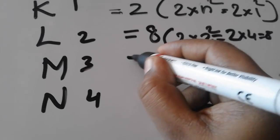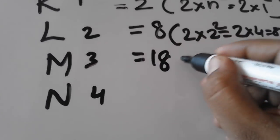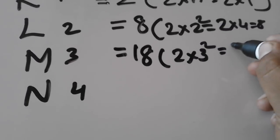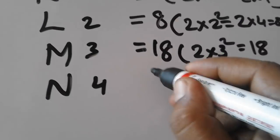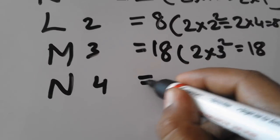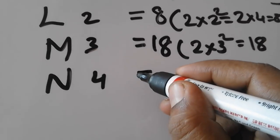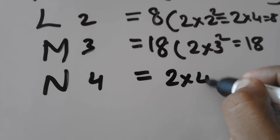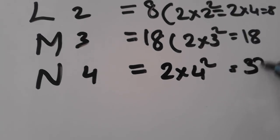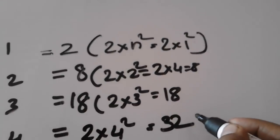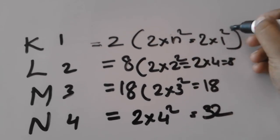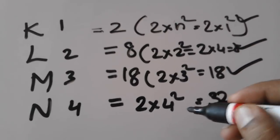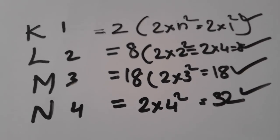M shell has 18 electrons. That is 2×3² = 18. Now the shell number is 4. 2×4² = 32 electrons. Maximum number of electrons in K shell is 2, L shell is 8, M shell is 18, N shell is 32.